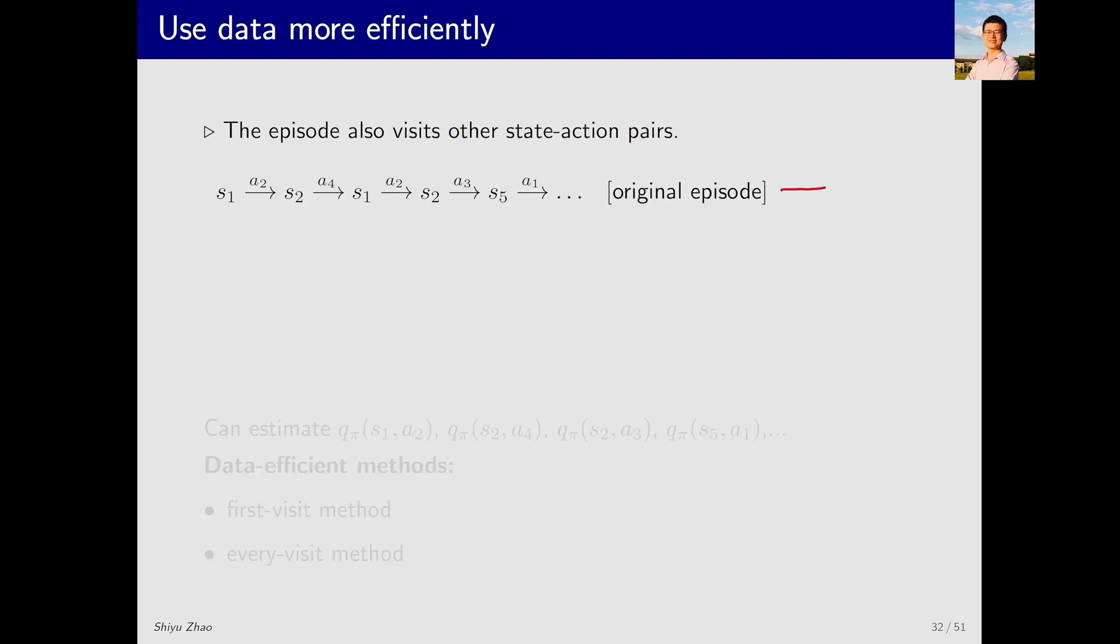Why is this so? Let's look at the original episode. Apart from visiting S1, A2, it also visits S2, A4, S1, A2 again, S2, A3, and S5, A1. If we ignore the initial part and consider the subsequent part starting from S2, A4, we get a new episode. This new episode can be used to estimate the action value of S2, A4.